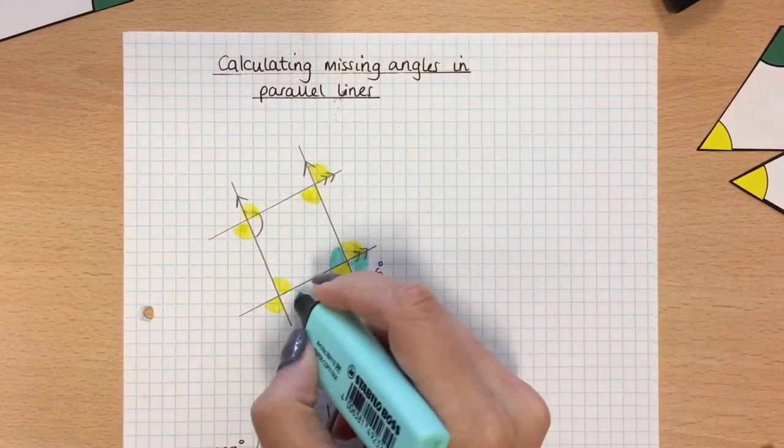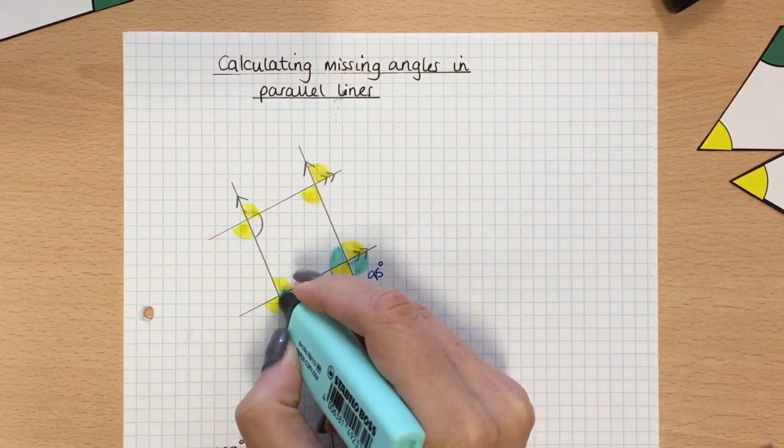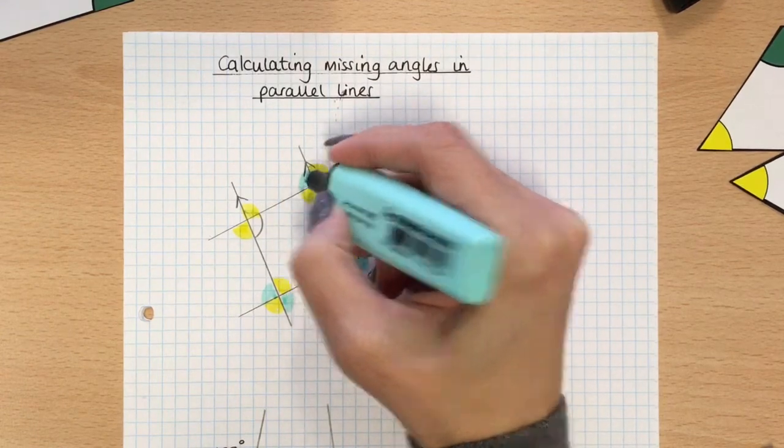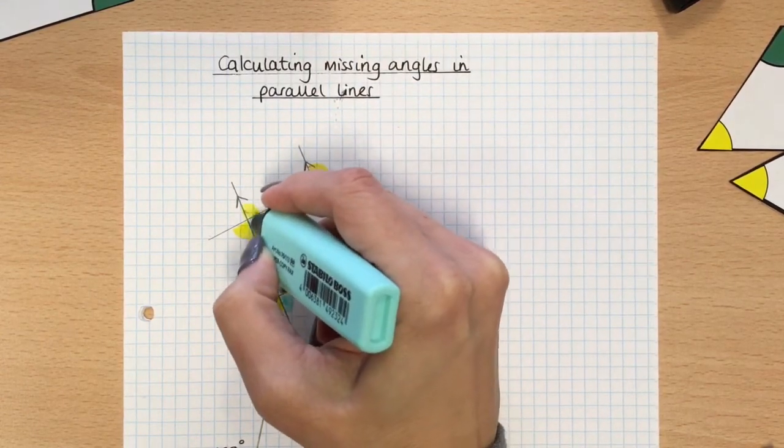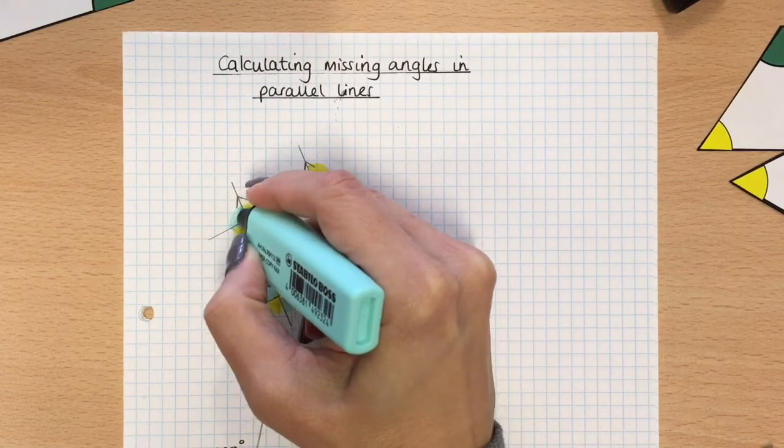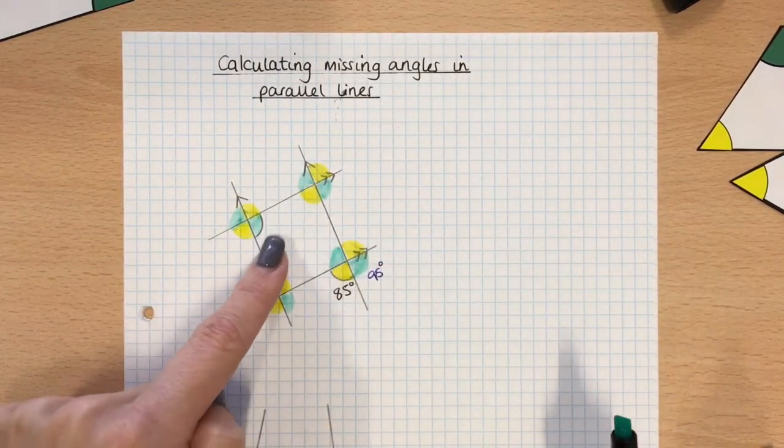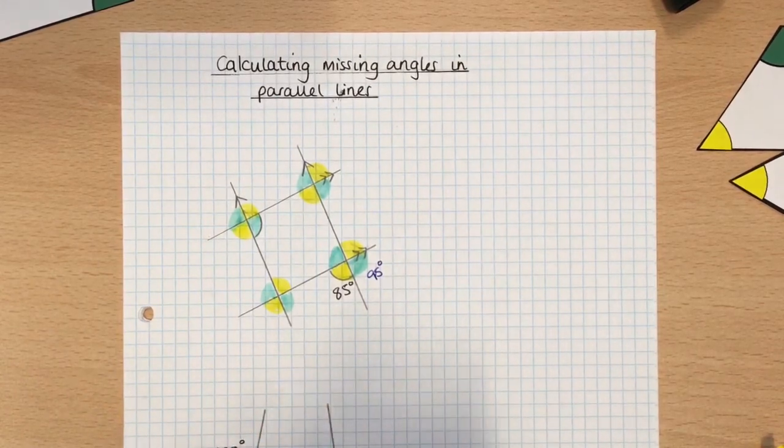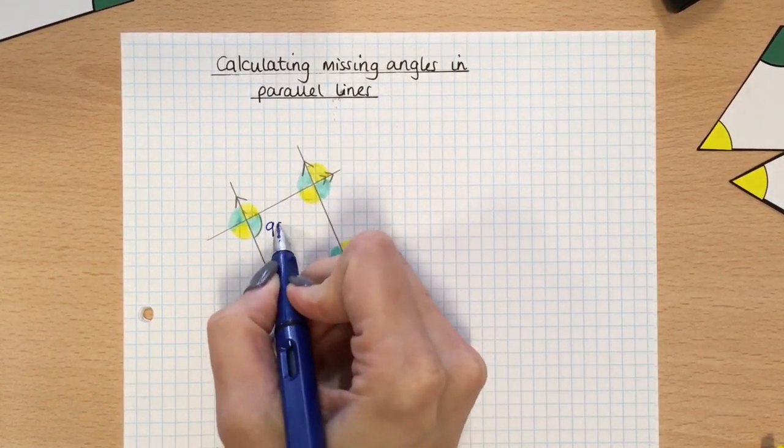So now if I colour in the green ones, here and here, here and here, here and here. So therefore the one that I actually want to work out, which is this one, is green, and I've already worked it out, so I know that the missing angle is 95.